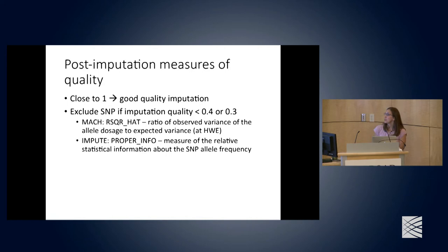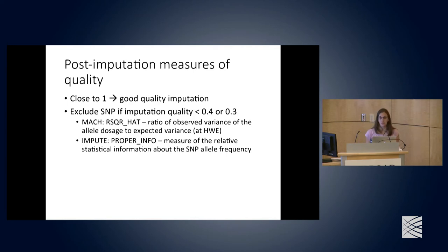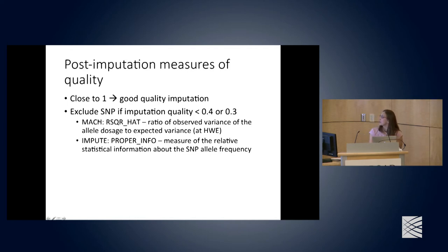After imputation, post-imputation quality control is important. When a measure of imputation quality is close to 1, it indicates good imputation. SNPs with poor imputation quality should be excluded prior to analysis — typically those with quality scores below 0.3 or 0.4. Different programs use different names: MACH uses R-squared hat, while IMPUTE uses the INFO field to indicate imputation quality.